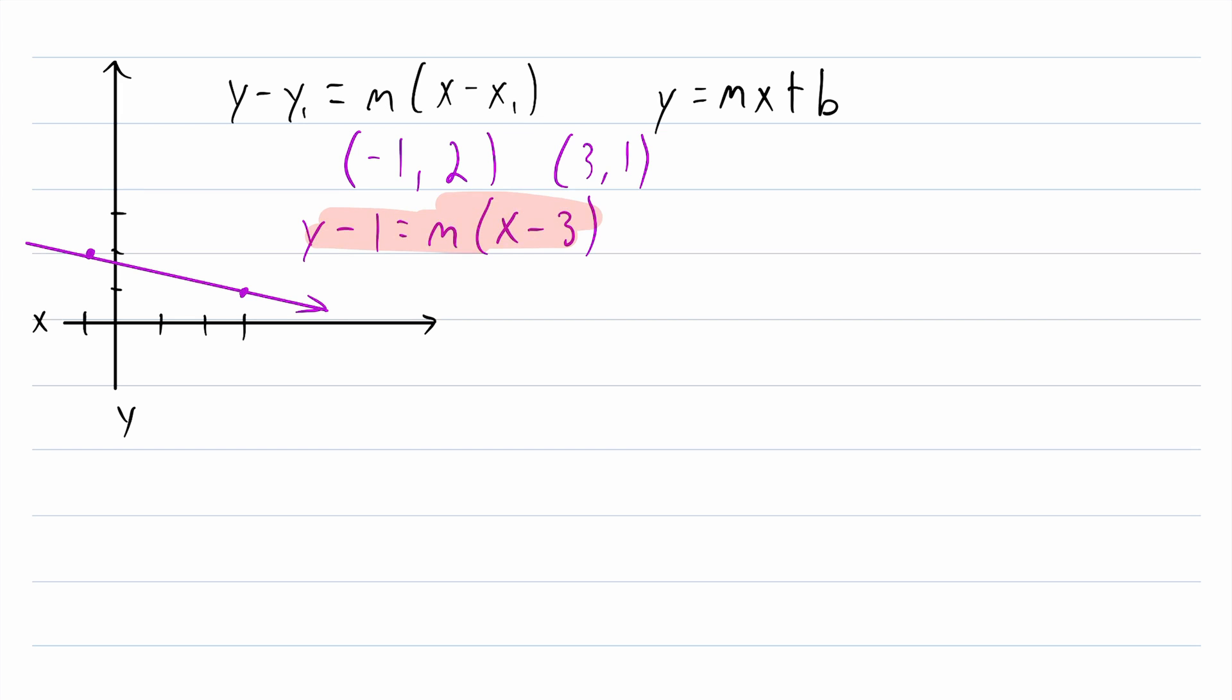Now to finish writing this equation, we just need the slope of the line, which is really easy to find from two points using the slope formula. Remember that the slope of a line is the vertical change per unit of horizontal change, or rise over run, as it's often called.